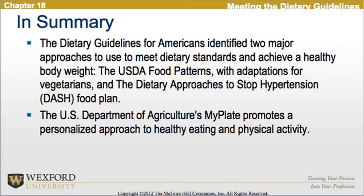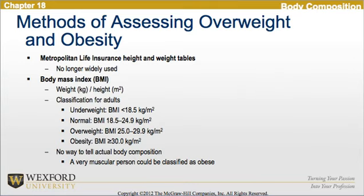Looking at methods of assessing overweight and obesity, the Metropolitan Life Insurance Height and Weight Tables are no longer widely used. Body mass index, or BMI, is the weight in kilograms divided by the height in meters squared. The classification for adults includes underweight, normal, overweight, and obesity. However, there is no way to tell the actual body composition, so a very muscular person could be classified as obese.